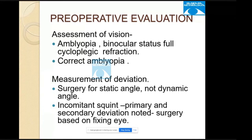The ultimate goal of strabismus surgery is binocular vision. If one eye has less vision and the other is good, binocular vision cannot be achieved. So the first step in surgical planning is to achieve equal vision — through appropriate refractive correction and appropriate amblyopia treatment.